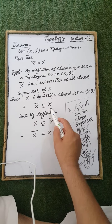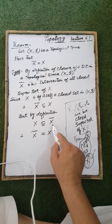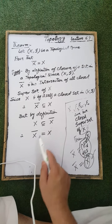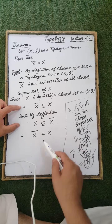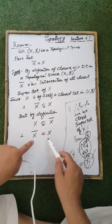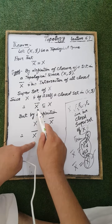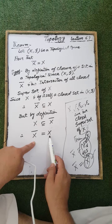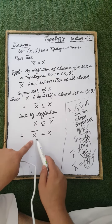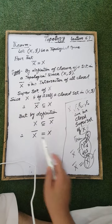The closure of the set X is a subset of the ground set X. But by definition, the set X is a subset of the closure of the set X. Therefore, from these two inequalities, according to the definition of equality of two sets, the ground set X of the topological space is equal to the closure of the set X.